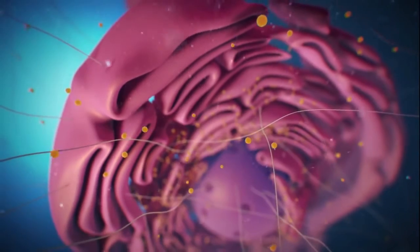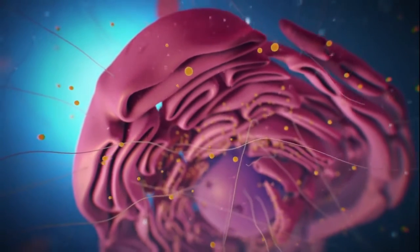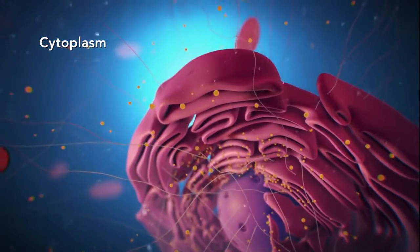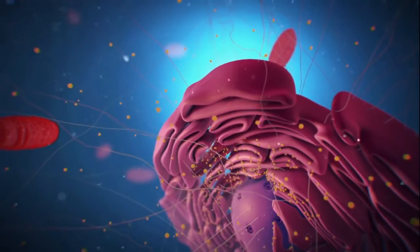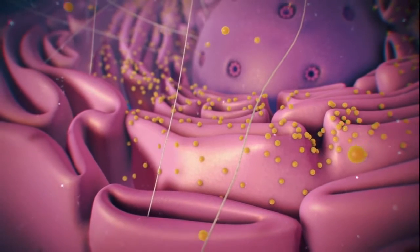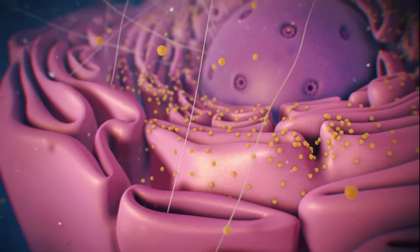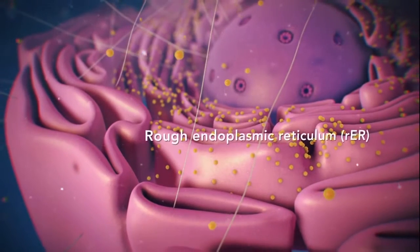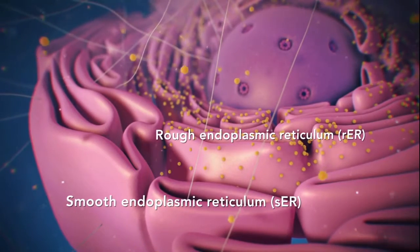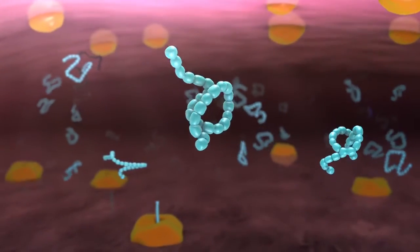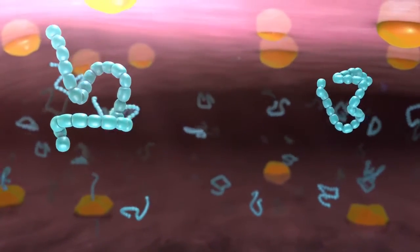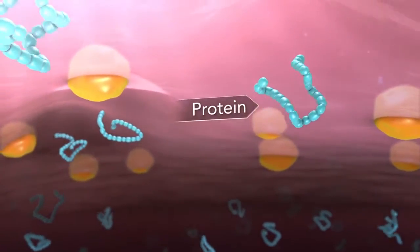Outside the nucleus, the ribosomes and the rest of the organelles float around in cytoplasm, which is the jelly-like substance. Ribosomes may wander freely within the cytoplasm or attach to the endoplasmic reticulum, sometimes abbreviated as ER. There are two types of ER: rough ER has ribosomes attached to it, and smooth ER doesn't. The endoplasmic reticulum is a membrane-enclosed passageway for transporting materials such as the proteins synthesized by ribosomes.